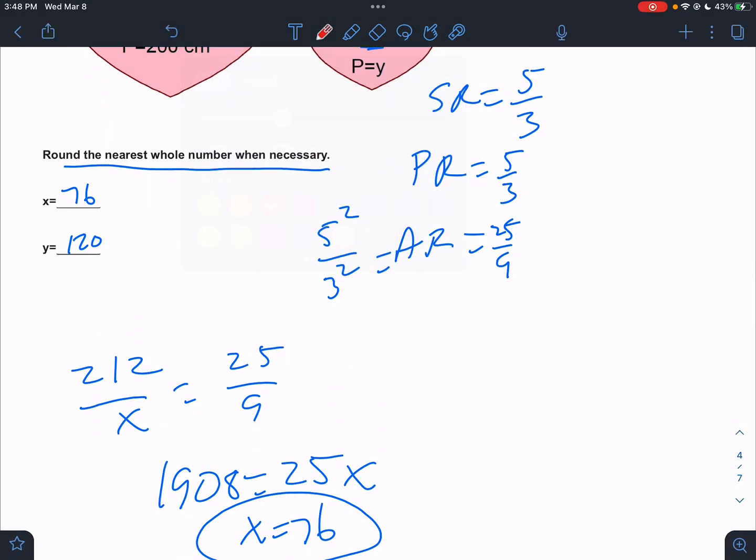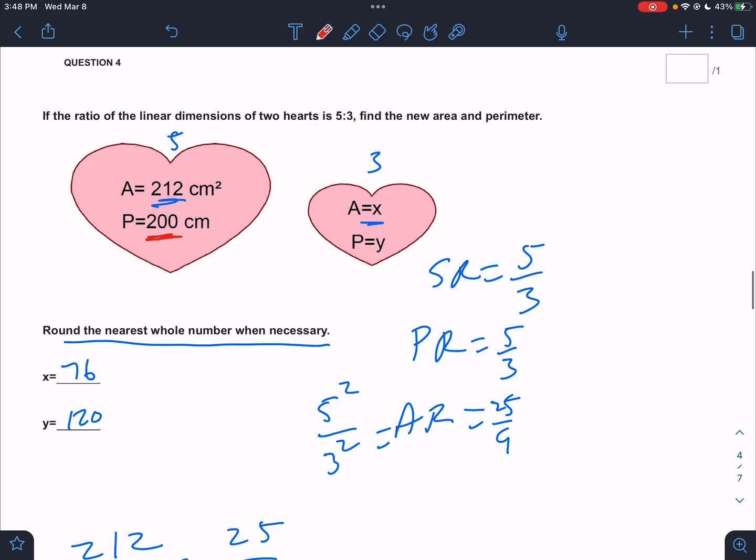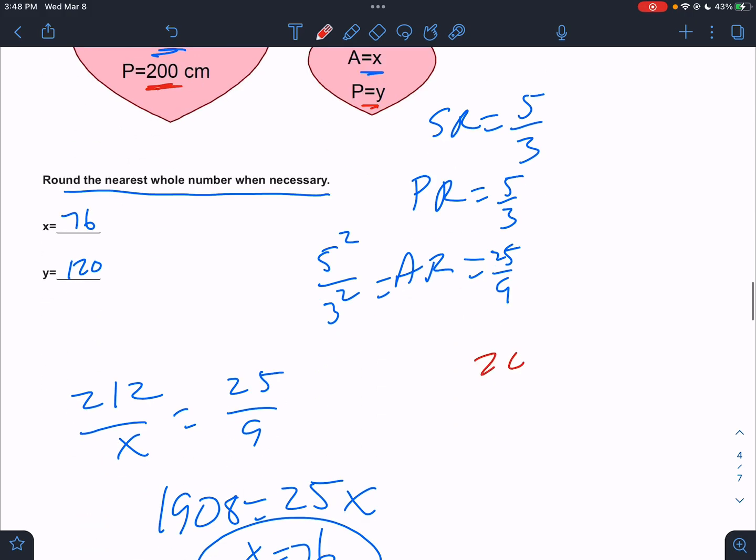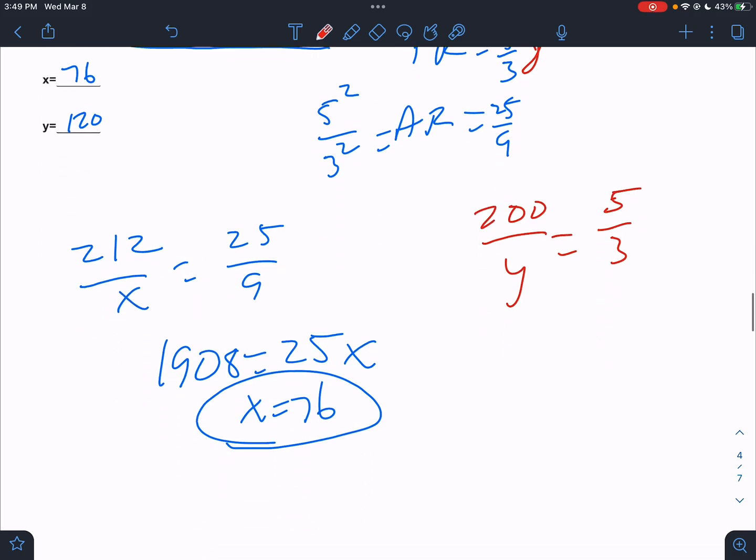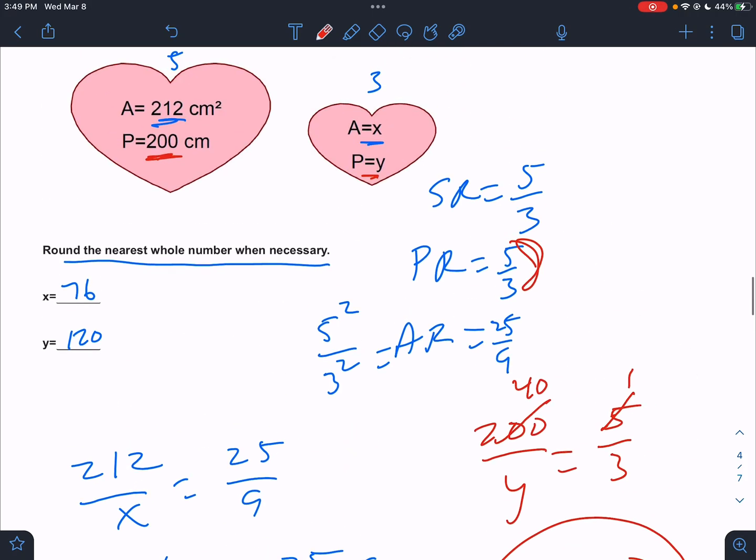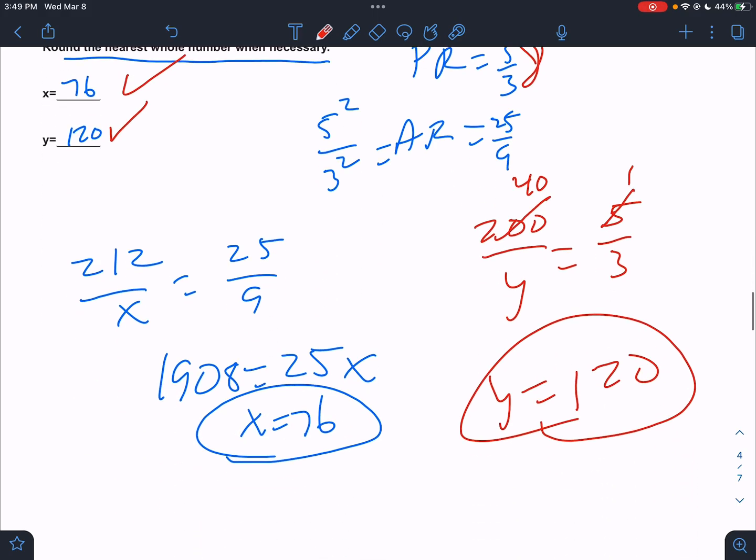To solve for the perimeter, well, that would be 200 over Y. The perimeters have a ratio of 200 to Y, and the perimeter ratio is a linear measurement. So you don't do anything to work with perimeter. This one might be a little bit easier. 5 and 200 reduces to 1 and 40. So that means Y equals 120. 76 and 120 are your answers.